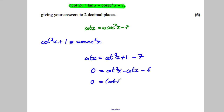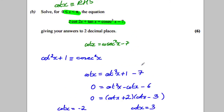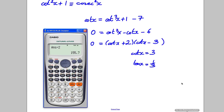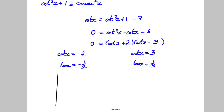Since cot is 1 over tan, these mean tan(x) = 1/3 or tan(x) = −1/2. I need to find all solutions to two decimal places between 0 and π. Taking inverse tan of −1/2 on the calculator — I initially got −26.5 but that was in degrees mode, which is wrong.